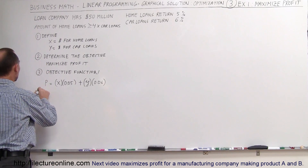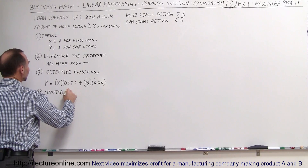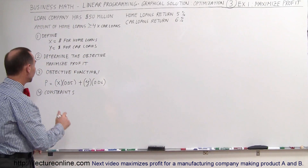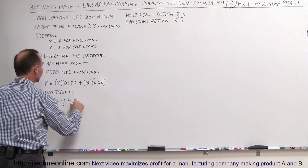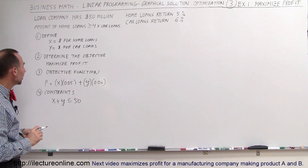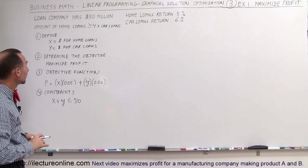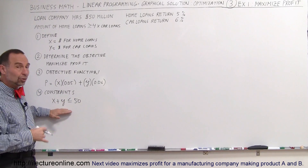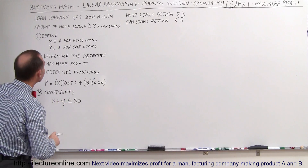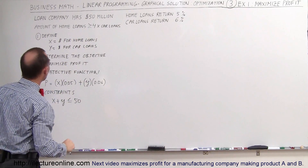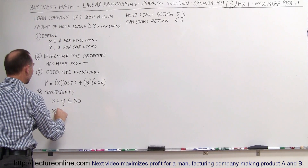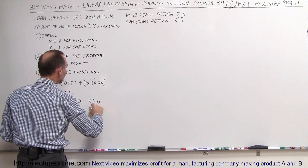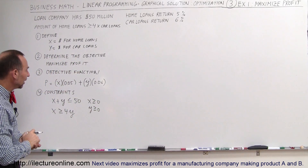The next thing you want to do is determine the constraints. Usually there's always something that will constrain you — there's a finite amount of money, there are some conditions that need to be met. In this case, we have $50 million, so X plus Y has to be less than or equal to 50 million. X plus Y together cannot be more than that. Sometimes it turns out you'll get the maximum profit by not using all of your dollars. The next constraint is that the amount of home loans should be at least four times as big as the car loans, so X must be greater than or equal to 4 times Y. Of course, X must be greater than or equal to 0 and Y must be greater than or equal to 0.